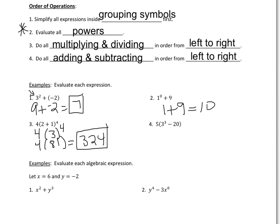In example four, we have to do what's inside the grouping symbols first, and even within those grouping symbols you follow order of operations — so do the exponent first. We have 5 times the result of the parentheses. Inside, 3 cubed is 3 times 3 equals 9, times another 3 equals 27. Then 27 minus 20 gives 7. So we have 5 times 7, which equals 35.